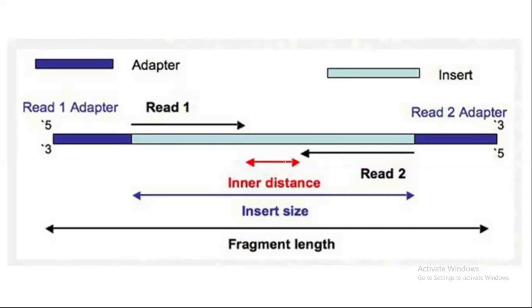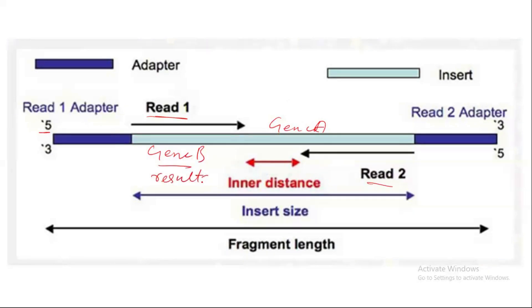This is a more elaborate diagram — read number one and read number two. Although the DNA comes from a single sample, we are sequencing both ends of the DNA. It is important to sequence both ends in order to gain much more information. For example, if one end contains information about gene A and the other end contains information about gene B, sequencing only one end may miss gene B entirely. So it is important to sequence both sides.